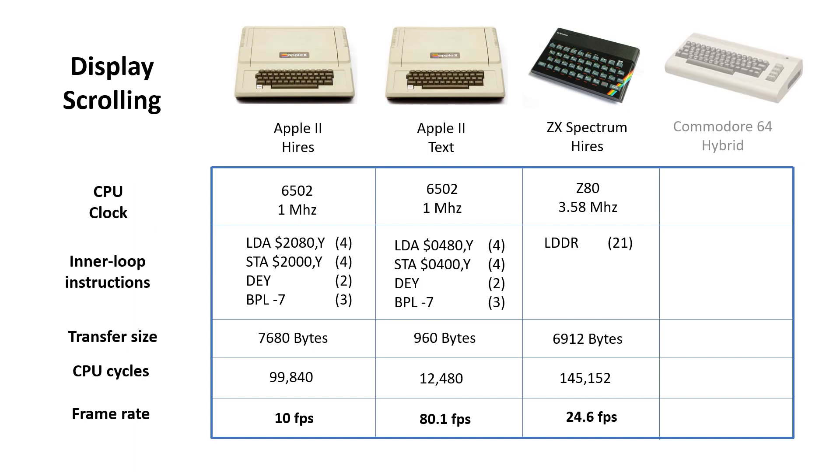By contrast, the Commodore 64 had a 6510 running at 1 MHz, but it had hardware scrolling. So in theory, you could scroll the screen every scanline, and possibly even more often if you wanted to.